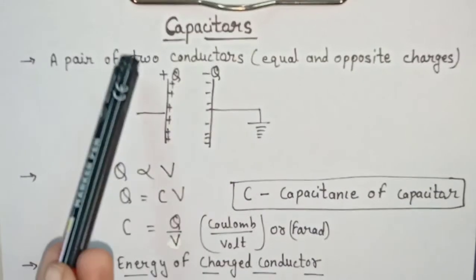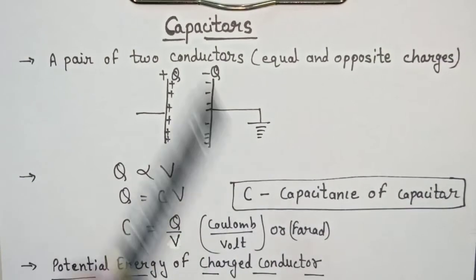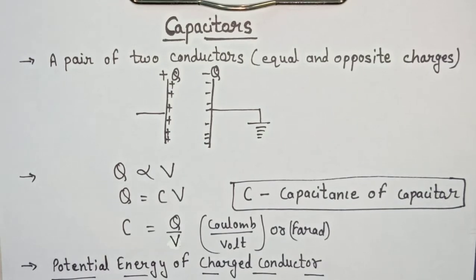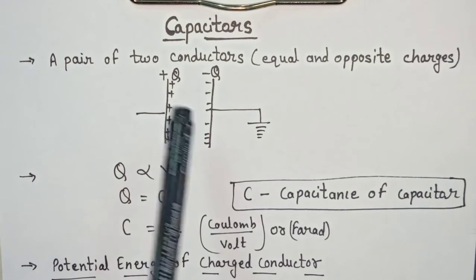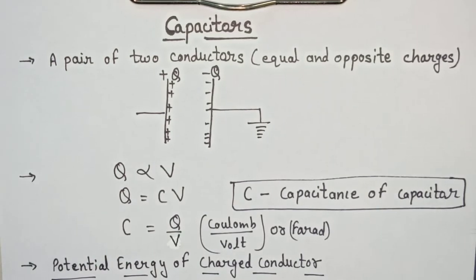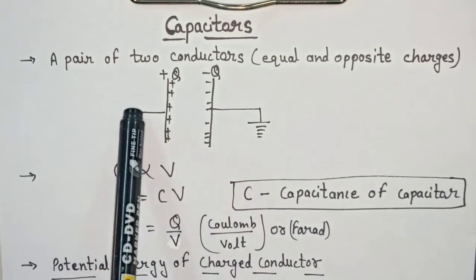This arrangement is called a capacitor, and the two conductors are kept very close to each other. This type of arrangement is used for storage of charge — the capacitor acts like a store room for charge. Charges are stored inside it. So capacitors are an arrangement of two conductors of equal and opposite charges, and they store charges.